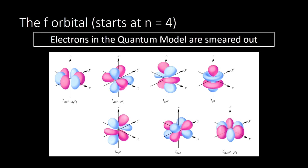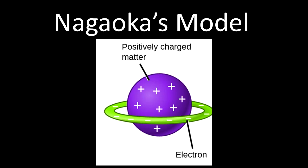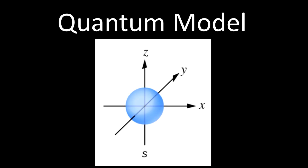I wish nature were simpler to explain, but the atom is really complicated. So let's think about what we've learned: electrons in the quantum model behave like waves and are smeared out into strange shapes. If you get that much, you're doing well with this model. We've gone from Dalton's model, to Nagaoka's planetary model, to Bohr's planetary model, to our current quantum model, which describes electrons as waves — smeared out in S, P, D, and F orbitals. What we'll do in the next few videos is take a look at where electrons hang out, which is the study of electron configuration.